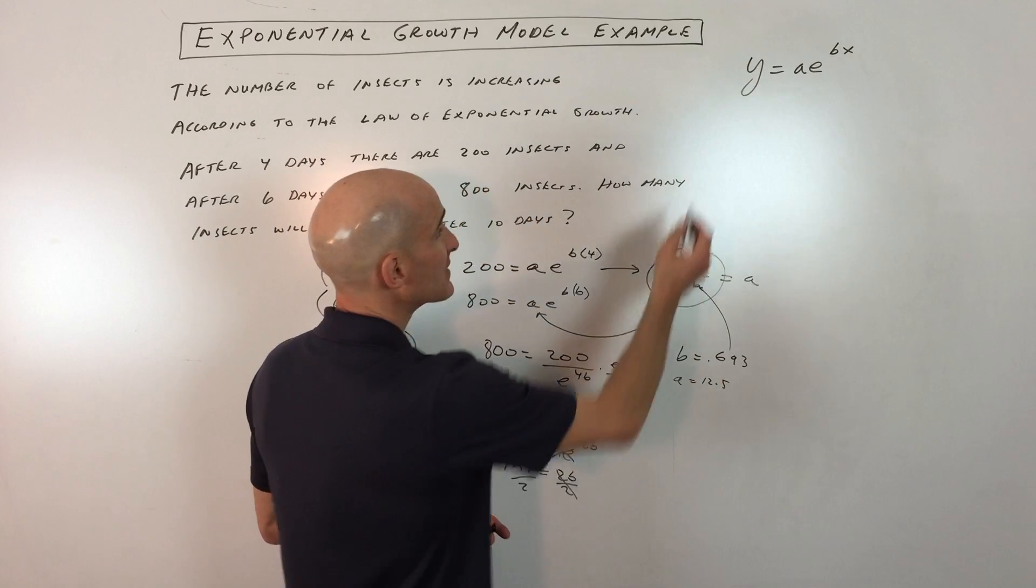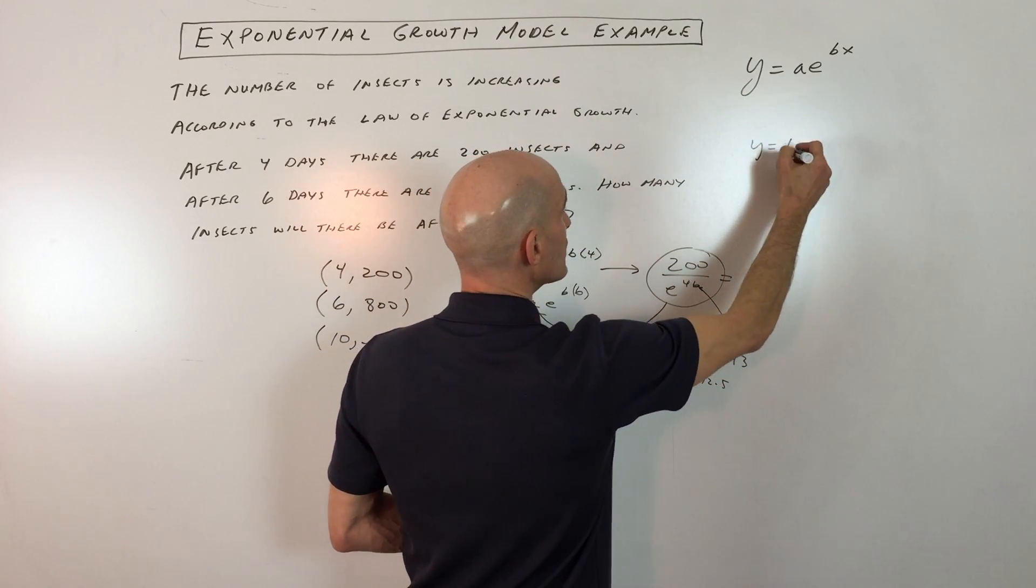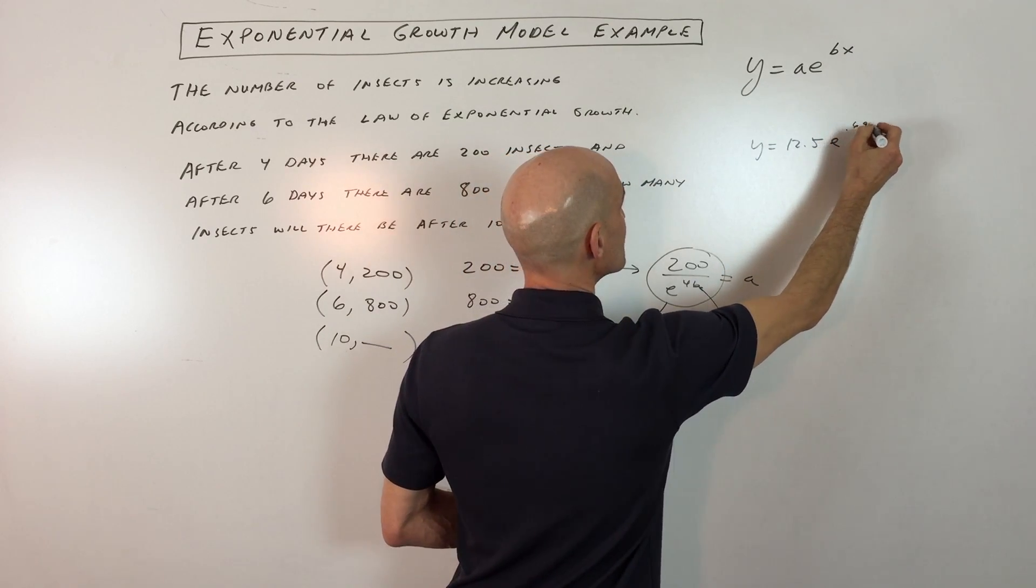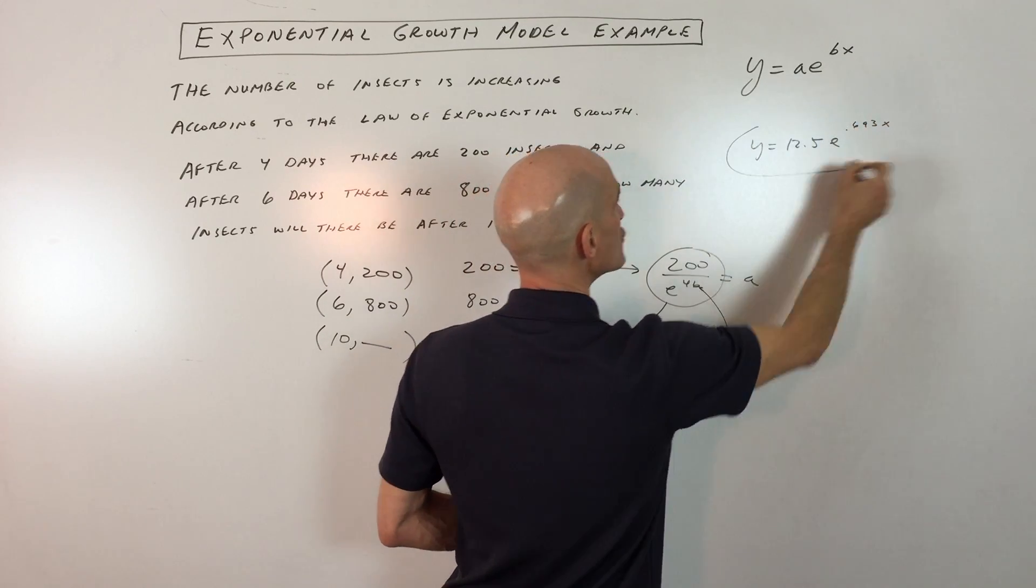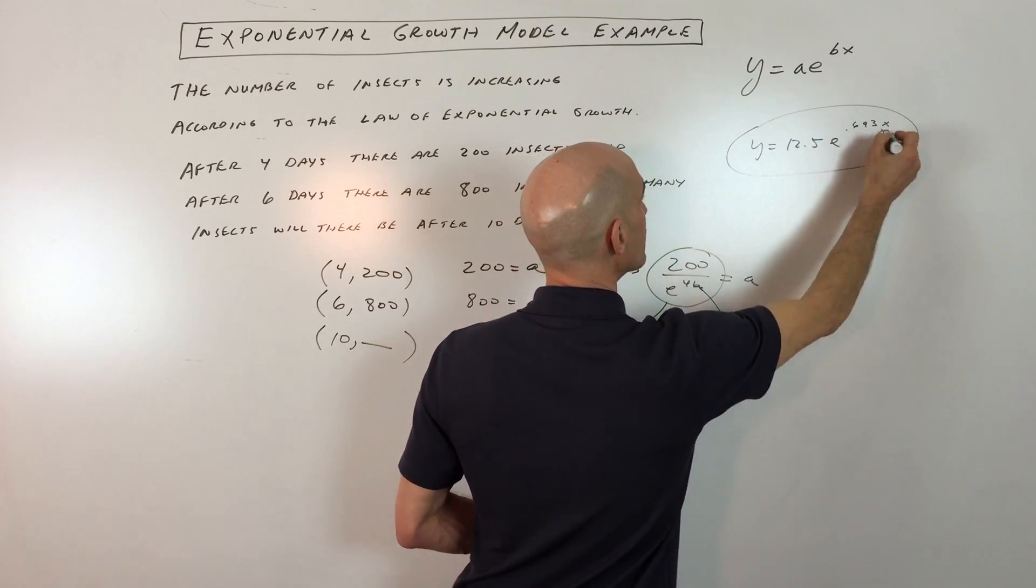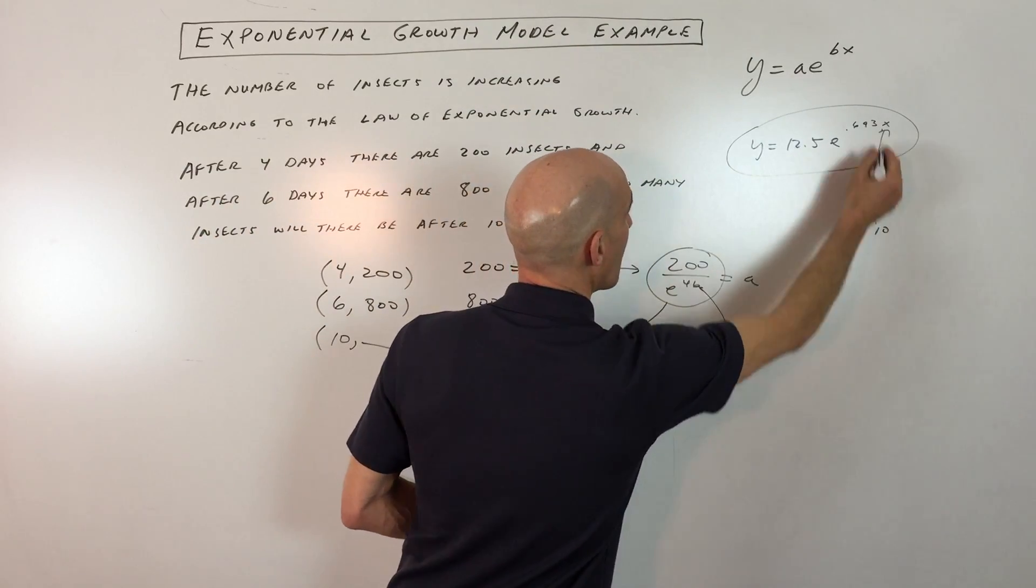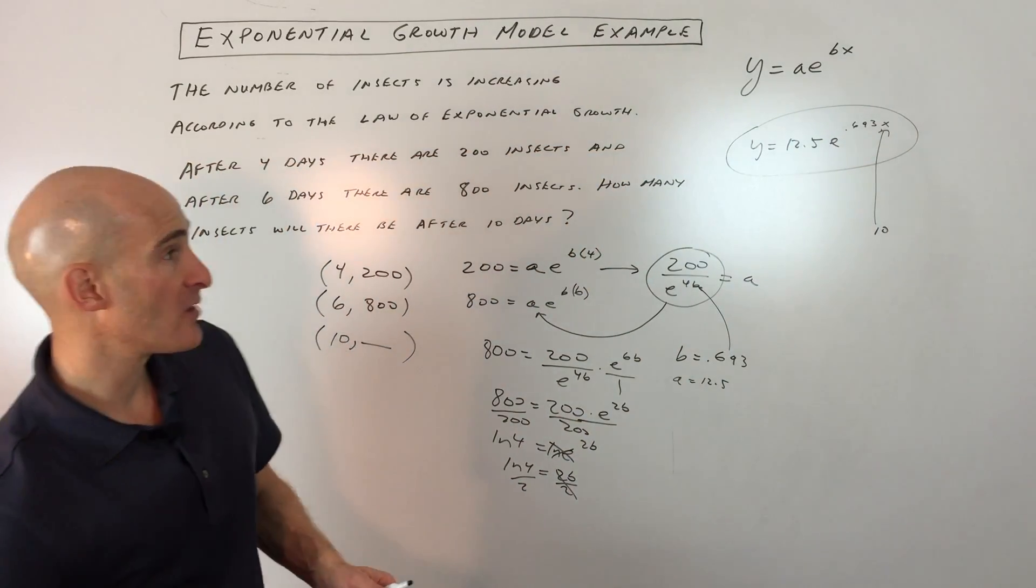If we put all this back together into our equation, we have y equals 12.5 e to the 0.693x. That's our exponential growth model. Now we're trying to figure out how many insects there will be after 10 days. So we're going to put 10 in place of x and then simplify.